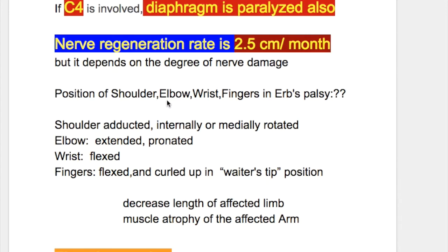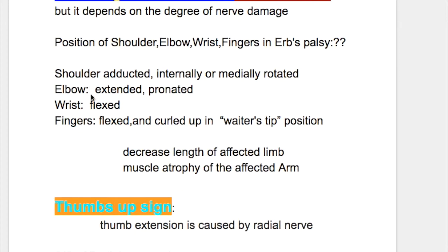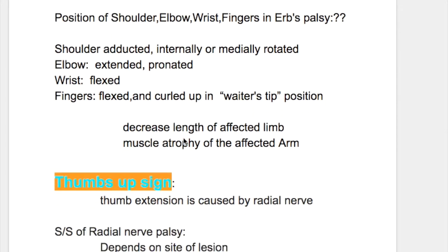What's the position of the shoulder, elbow, wrist, and fingers in Erb's Palsy? The shoulder is adducted and internally or medially rotated. The elbow is extended and pronated. The wrist is flexed due to loss of extensors and unopposed action of flexors. The fingers are flexed and curled up in a waiter's tip position.